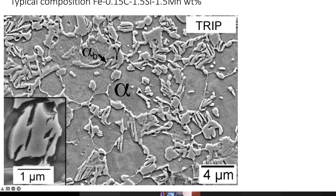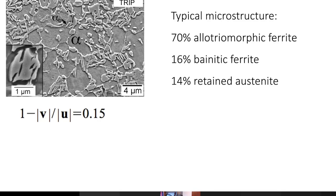For automotive applications, a 100% bainitic microstructure is not ideal for car body panels, so we need a mixture of allotriomorphic ferrite, bainite, and retained austenite. This is produced by either heating cold-rolled steel into an intercritical region — getting recrystallization of ferrite and new austenite — then cooling into the bainite transformation range, or starting with a fully austenitic structure, cooling to generate some allotriomorphic ferrite, then holding in the bainite transformation region. The resulting microstructure has about 70% allotriomorphic ferrite, 16% bainitic ferrite, and 14% retained austenite at an average carbon concentration of just 0.15 wt%.